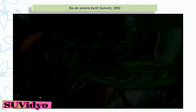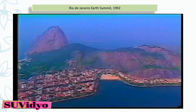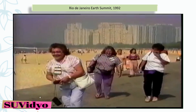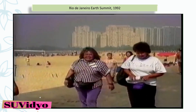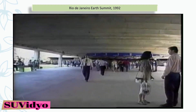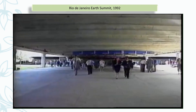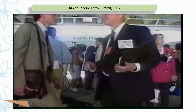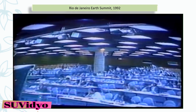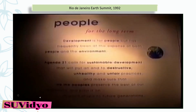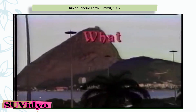In June 1992, more than 100 heads of states met in Rio de Janeiro in Brazil for the first International Earth Summit. The summit was convened for addressing urgent problems of environmental protection and socio-economic development at the global level. Representatives from 166 countries, 130 heads of state and 15,000 non-governmental organizations came together with hopes of deciding specific agreements that would balance environmental preservation with economic needs.